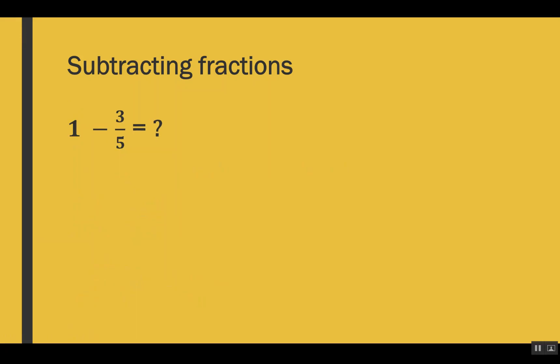Now let's see another example where there is a whole number 1 and we have to subtract a fraction from it. For whole numbers with no denominator, we can consider 1 as the denominator, because fractions are a kind of division — and dividing any number by 1 doesn't change its value. So this question can be rewritten as 1/1 − 3/5.